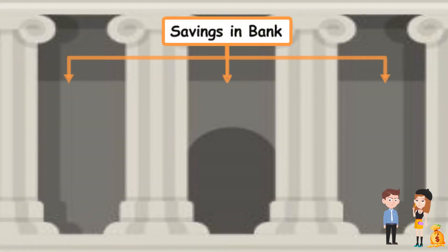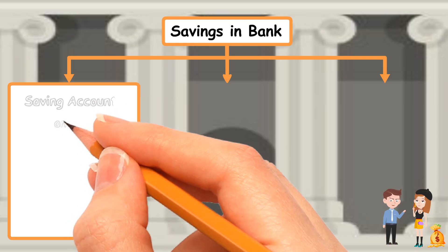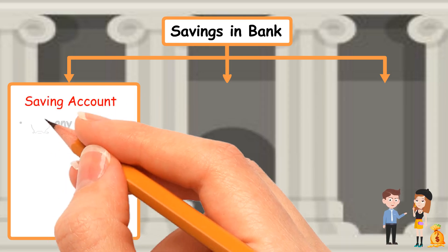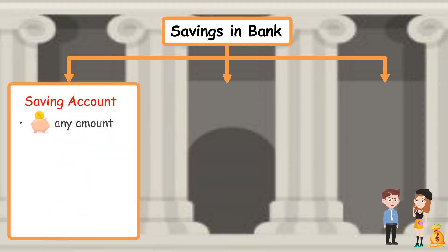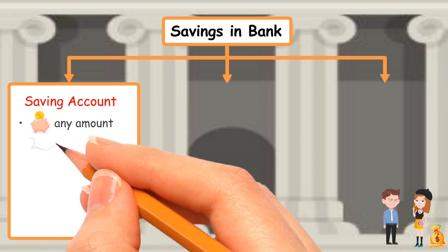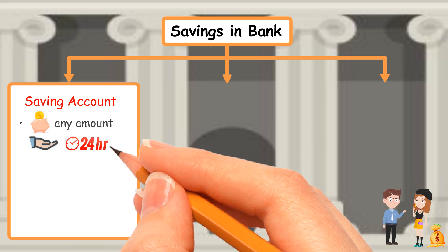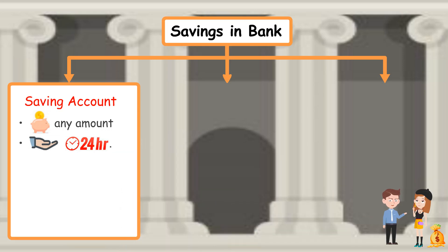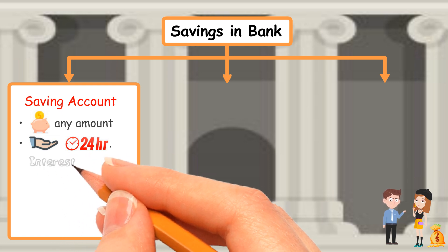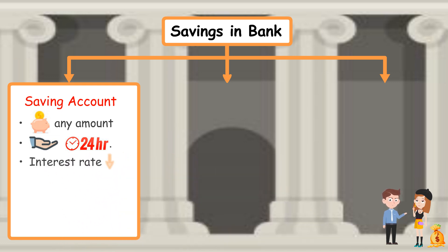Number one, savings account. You can save any amount and withdraw the money anytime. The interest is based on the total amount and duration of savings. However, the interest rate is low. You can use a debit card to withdraw your money at an ATM machine.